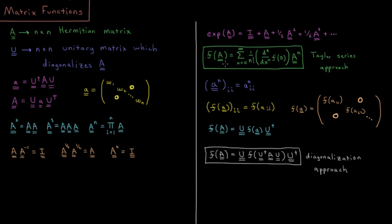So one approach is the Taylor series approach, where f of A equals a sum from n equals zero to infinity — or as far as we need to go for a good approximation — of one over n factorial times the nth derivative of f at zero, times A to the n. For e to the x, the nth derivative of e to the x is still e to the x, and e to the zero is one, giving us the familiar coefficients: one, one, one-half, one-sixth, and so on.